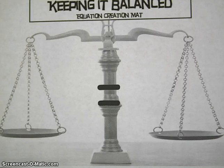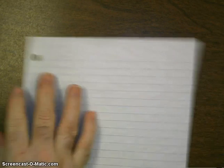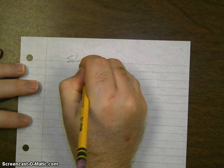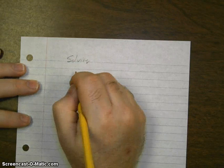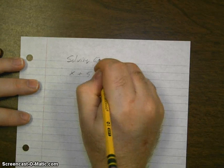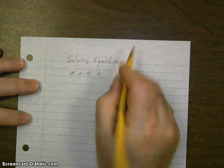So we are using a balanced scale to solve an equation. This is a model for solving an equation. Let's think of a simple equation, something like x plus 5 equals 9.